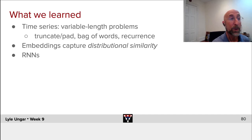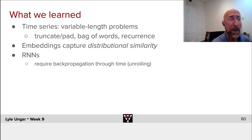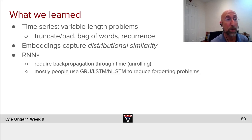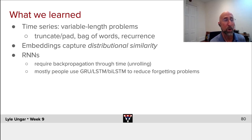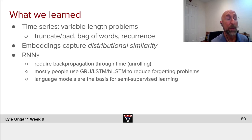We saw several different architectures for recurrent neural nets. We noted that all of them require unrolling and back propagation through time, which can make the gradient descent a little bit slower or unstable. We saw that RNNs tend to forget, so people mostly use gated recurrent units, LSTMs, or if you know the future as well as the past, bidirectional LSTMs, so one has less forgetting. We'll see methods like attention that deal with this next week.